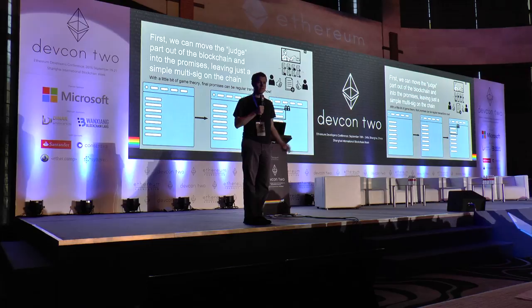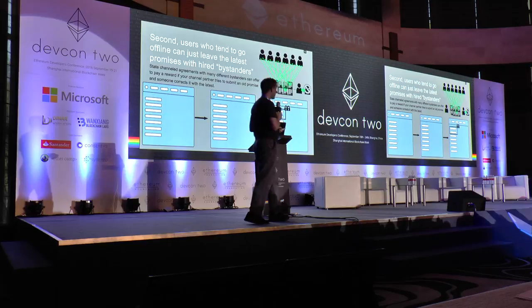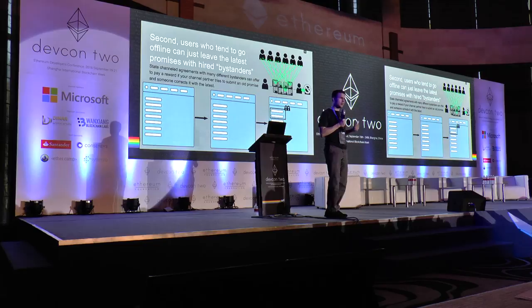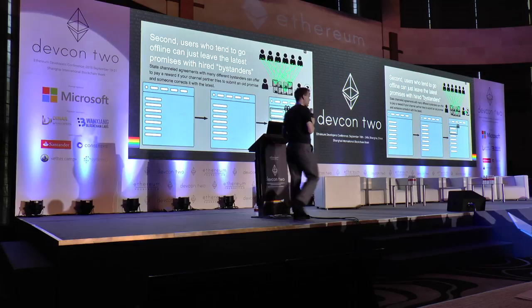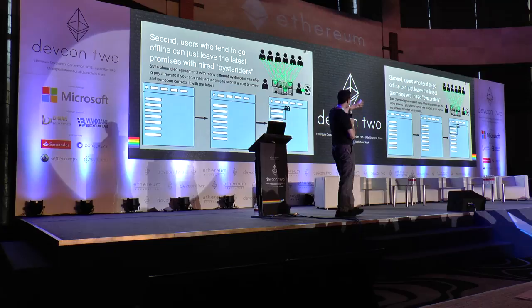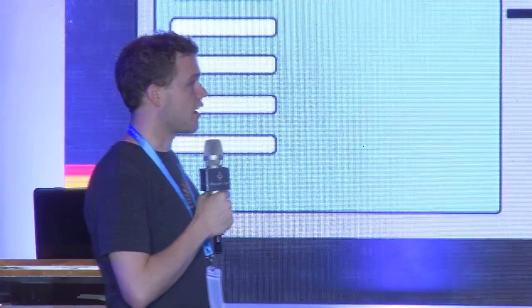Second, users tend to go offline. One of the challenges if you are using a state channel is that you have to be available to tell your story to the judge. Users are often not available. The key insight here is that you don't have to be available yourself — that promise just has to be available. What you can do is take a bunch of bystanders and set up an agreement with them, also in state channels. In the event that the other party publishes old state, you want to make sure they publish the latest state. If you set things up correctly, there's going to be a big punishment to that other party for publishing something out of date. There will be plenty of money to fund participation of these third parties, and it's very competitive — you can really rely on market dynamics to do this for you.